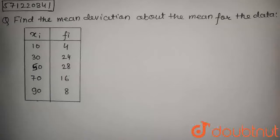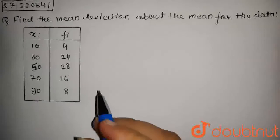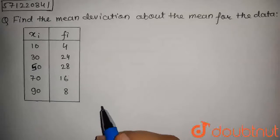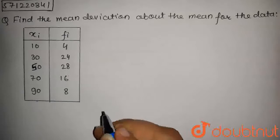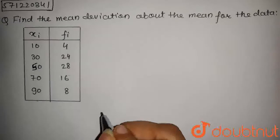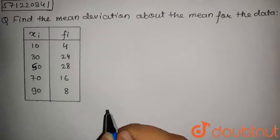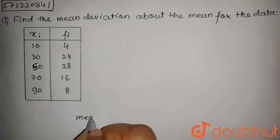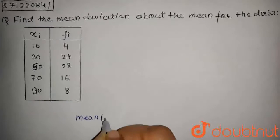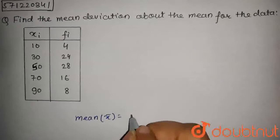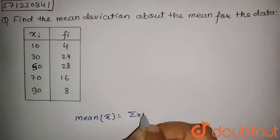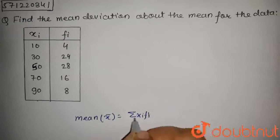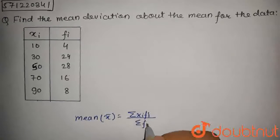The question is: find the mean deviation about the mean for the data. For this data, we have to find the mean deviation. To find the mean deviation, we have to first find the mean of this data. The mean, that is x̄, can be found by the formula: summation of xᵢfᵢ upon summation of fᵢ.